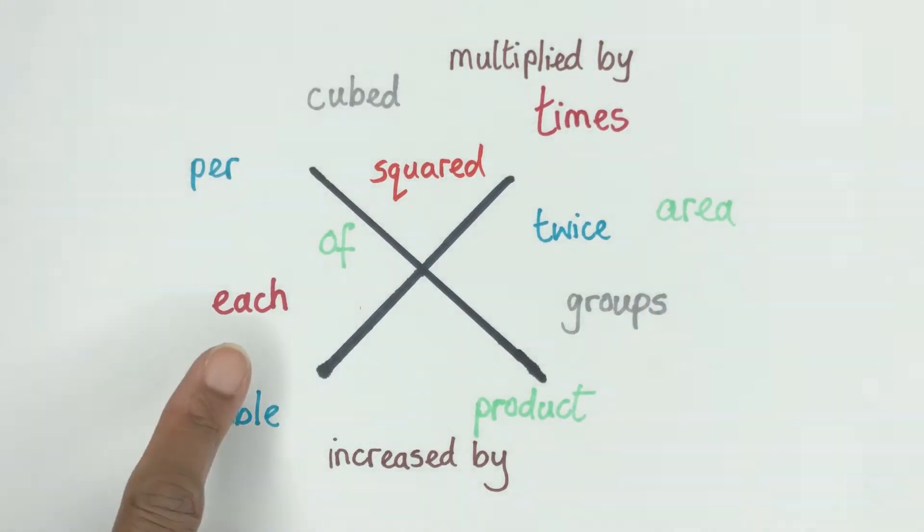Each is a very common one that's used a lot. Might be in something like a movie theater has 25 rows of seats with 20 seats in each row. Then you know you're multiplying 25 times 20.